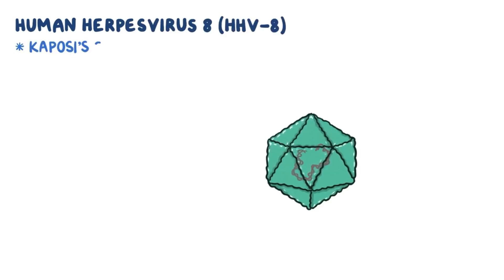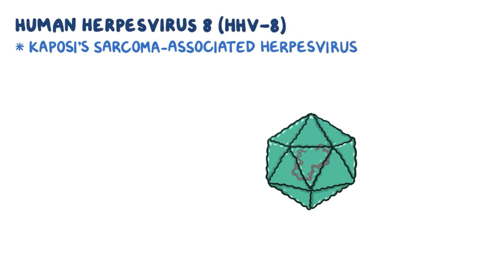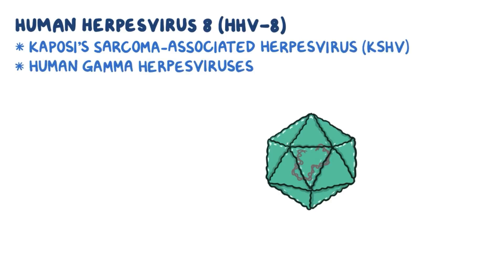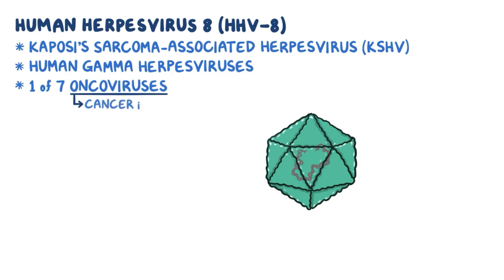Human herpesvirus 8, or HHV-8, also called Kaposi's sarcoma-associated herpesvirus, or KSHV, belongs to the family of human gamma herpesviruses. HHV-8 is one of the seven known oncoviruses, meaning viruses that cause cancer in people. Specifically, HHV-8 causes Kaposi's sarcoma, a type of cancer usually seen in individuals with AIDS.